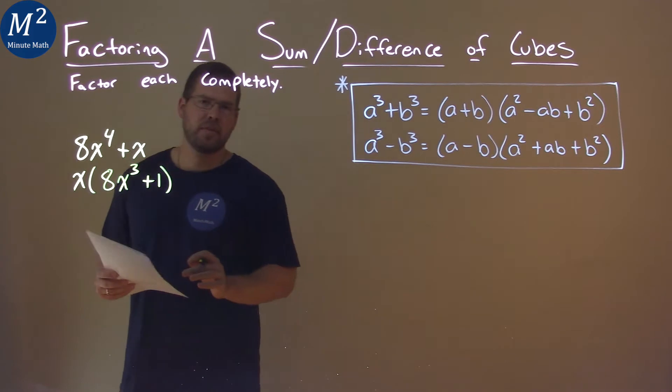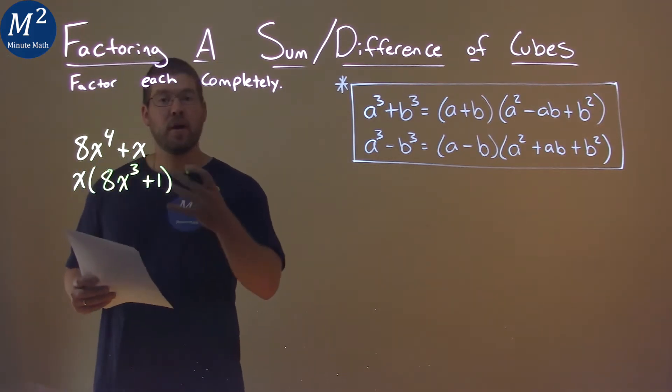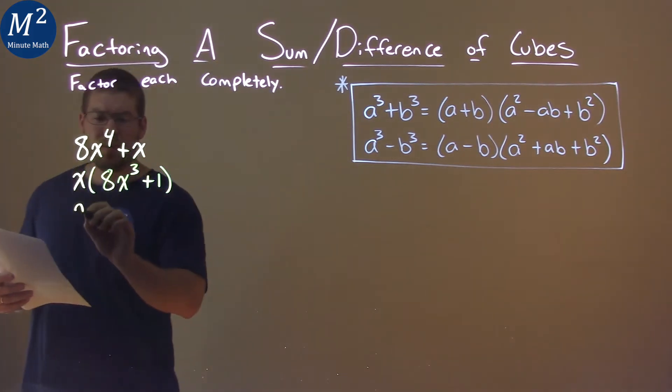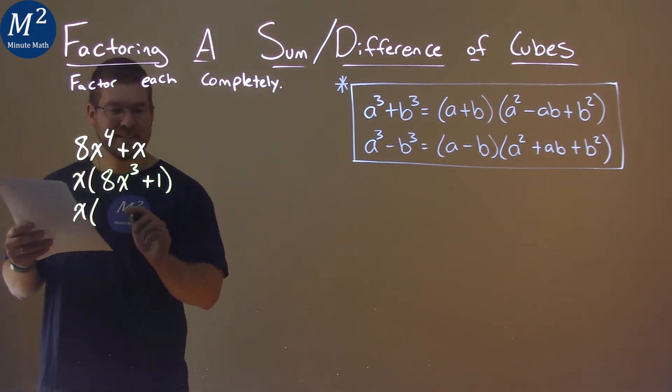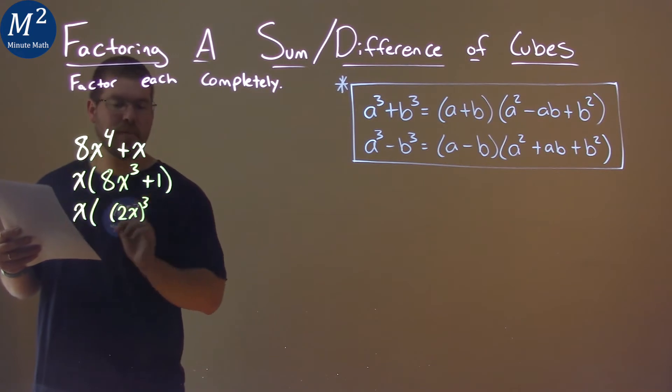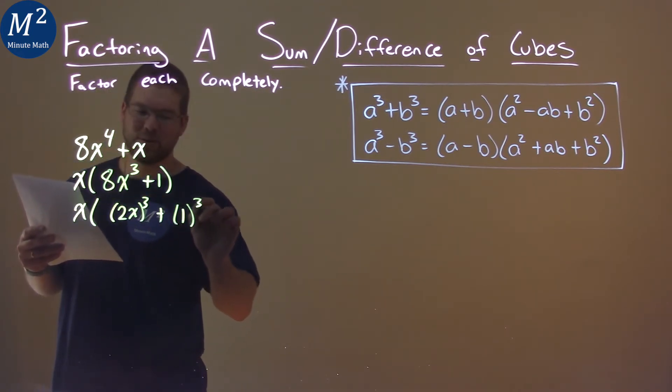Now this inside parenthesis part, can we write this as a sum of two cubes? And we can. x comes down, and 8x to the third power is the same thing as 2x all to the third power. 1 is the same thing as 1 to the third power.